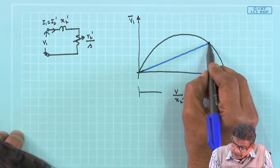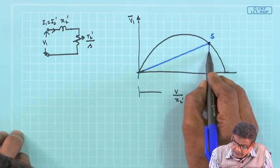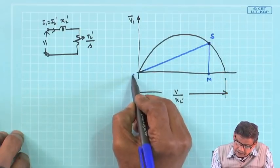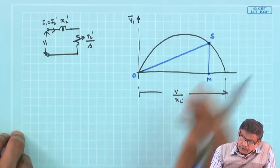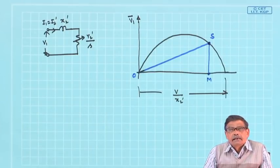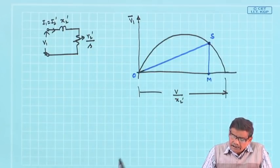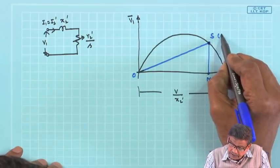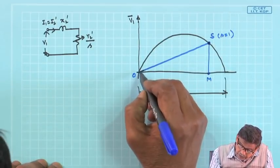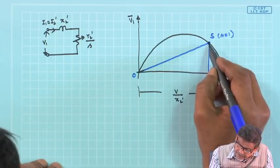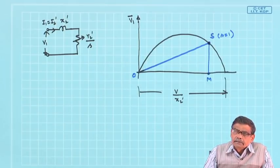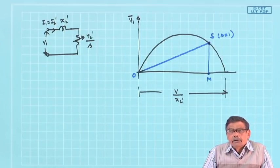At that point, I called it point S and dropped a perpendicular at M. This point I called O, and I showed that SM is a measure of air gap power as well as rotor copper loss at s equal to 1. When the machine is running, SM represents both rotor copper loss and torque developed.